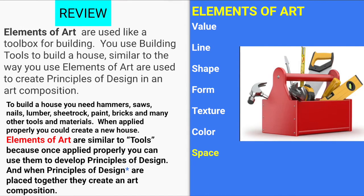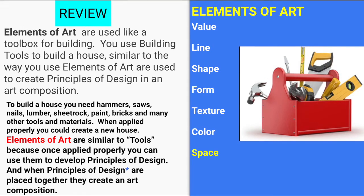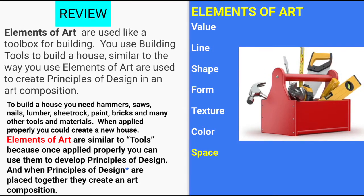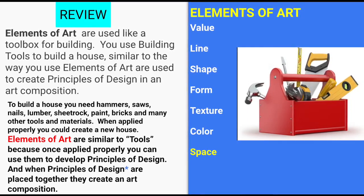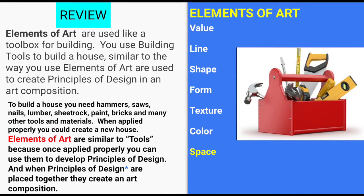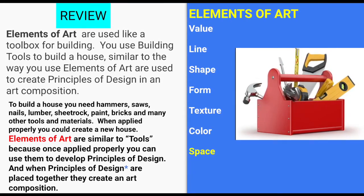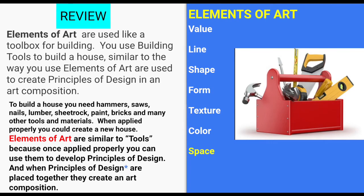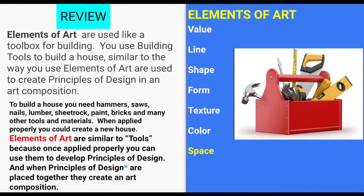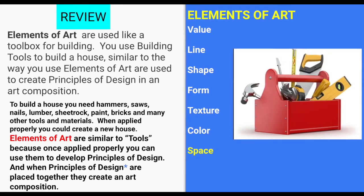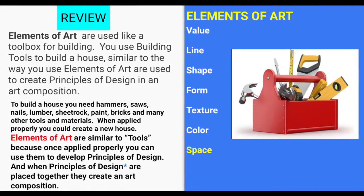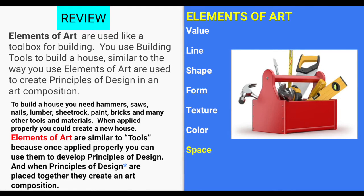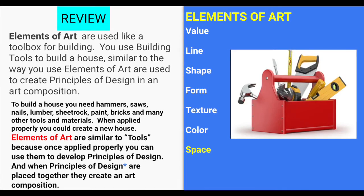We're going to do a quick review of the elements of art. Elements of art include value, line, shape, form, texture, color, and space. So far we've talked a little bit about line. These are your building tools that you use to build the principles of design and then turn it into an art composition. When you build a house, you need all these tools, and when you build a composition, you're going to need art tools. Elements of art are art tools.